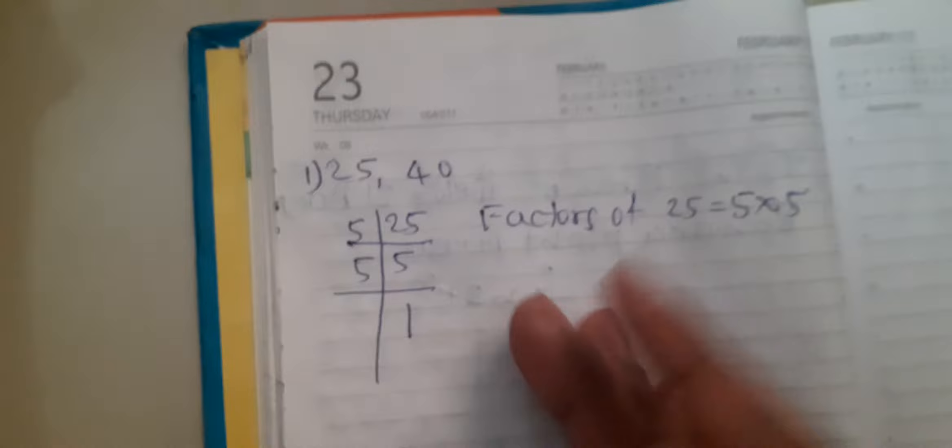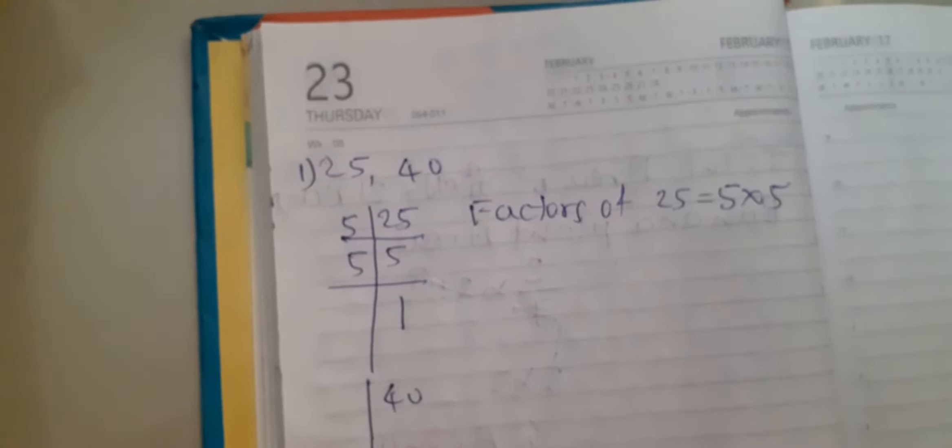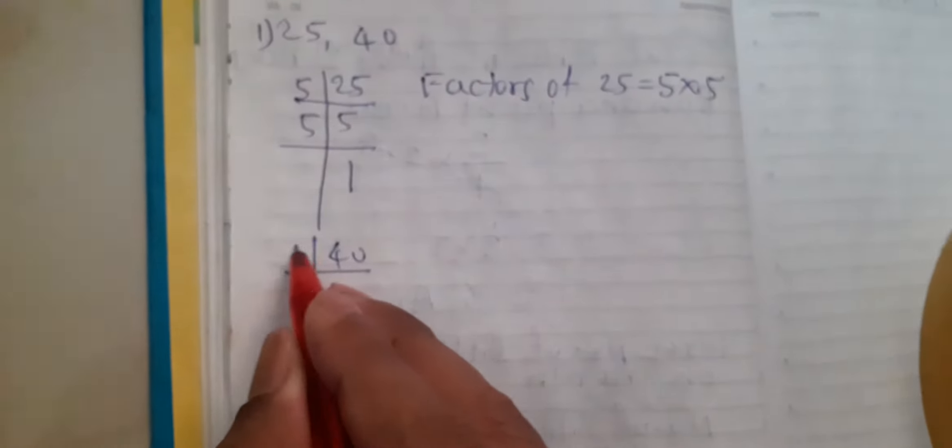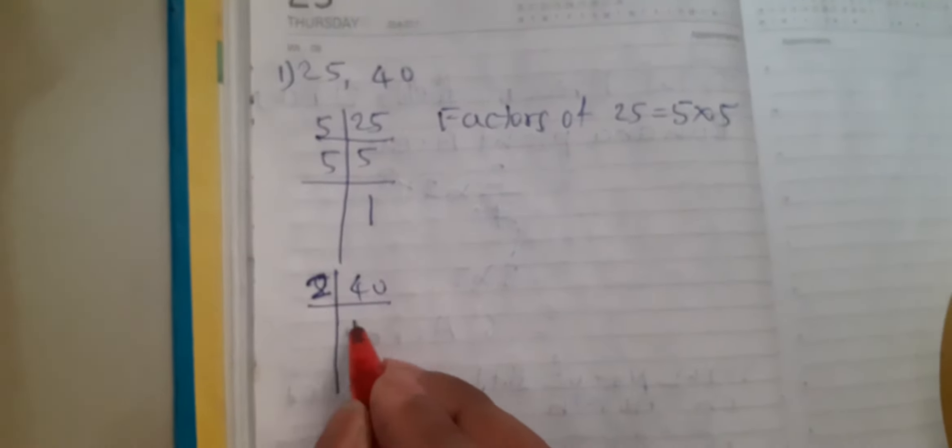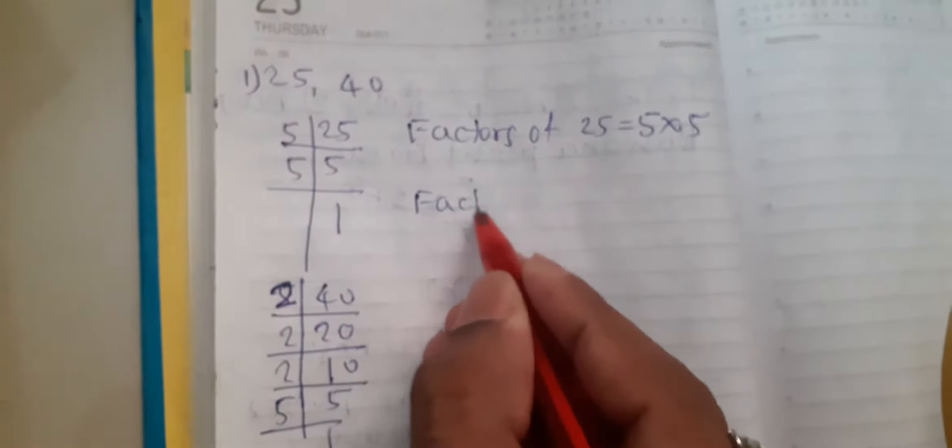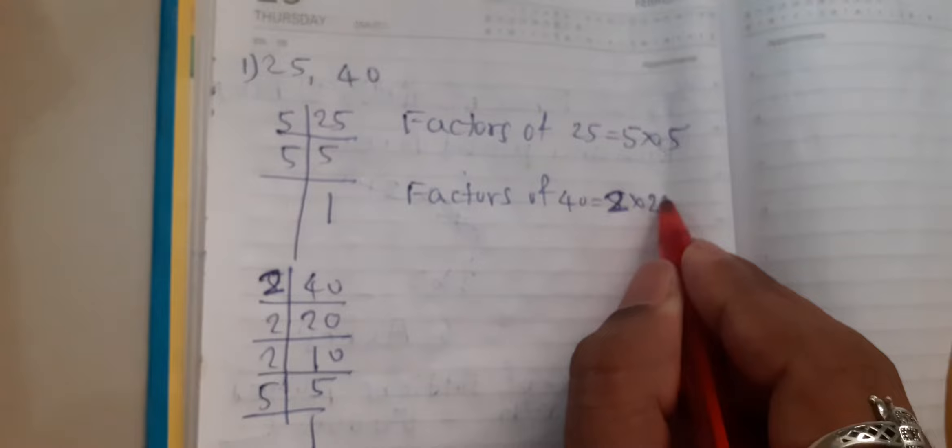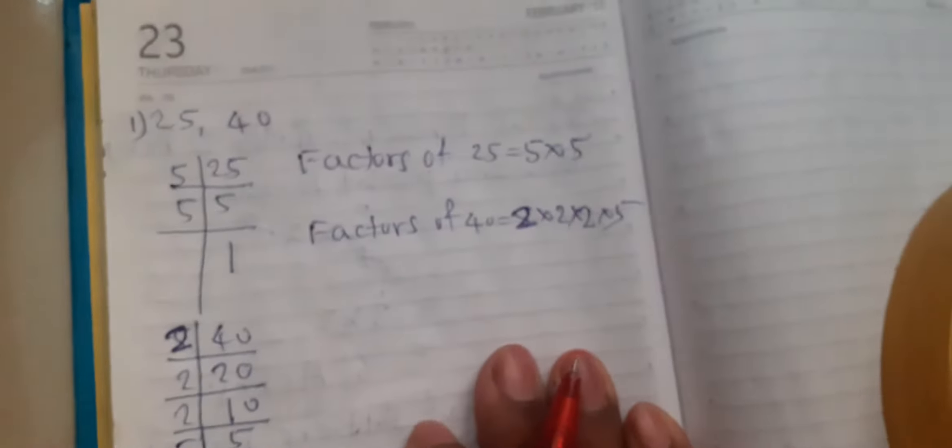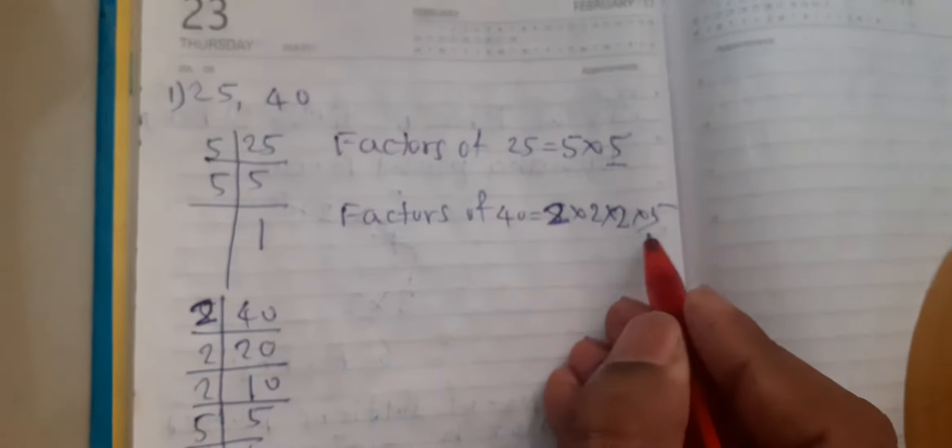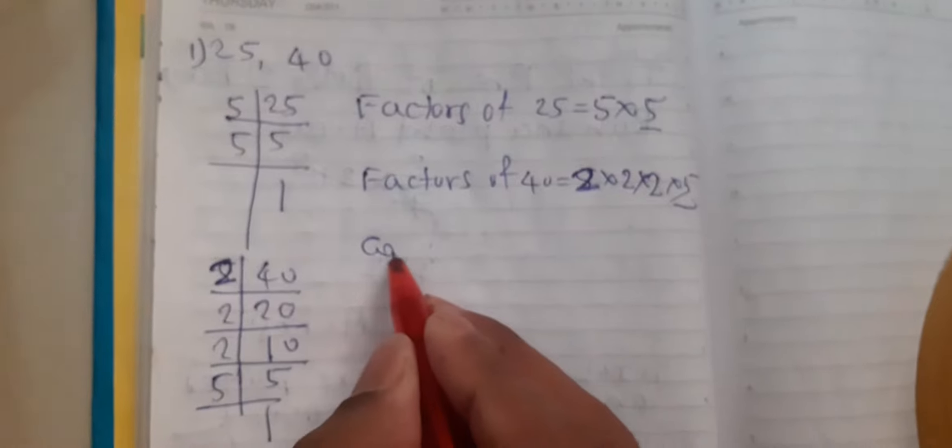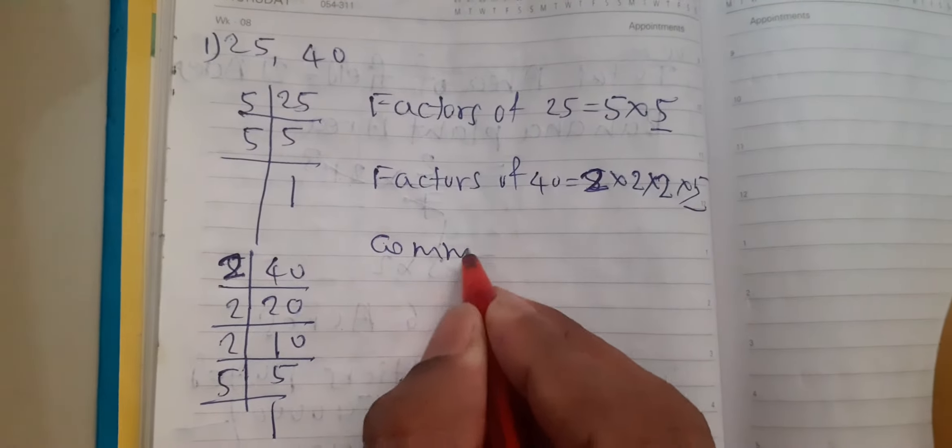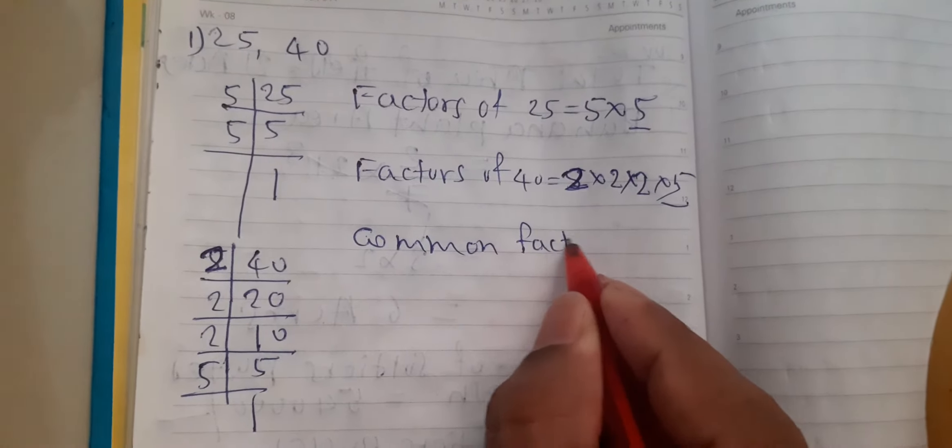Next is 40. We will get 40, and divide by 2. 2 times 20 is 40, 2 times 10 is 20, 2 times 5 is 10, and 5 times 1 is 5. Now the factor of 40 is 2 into 2 into 2 into 5. Now what is common? 5 and 5 are common, so the HCF is 5.